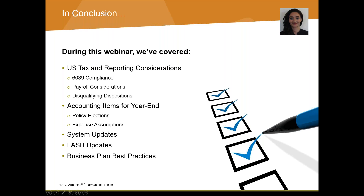We are at the end of the webinar. During this webinar, we covered U.S. tax and reporting considerations, 6039 compliance, payroll considerations, disqualifying dispositions, accounting items for year-end, policy elections, expense assumptions, system updates, FASB updates, and business plan best practices. Now we'll open it up for Q&A.